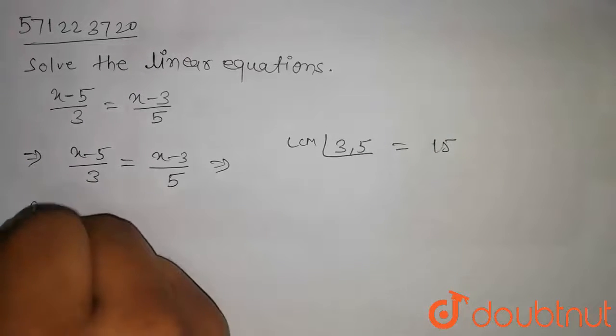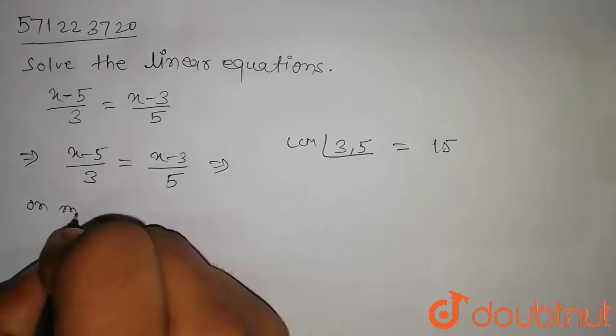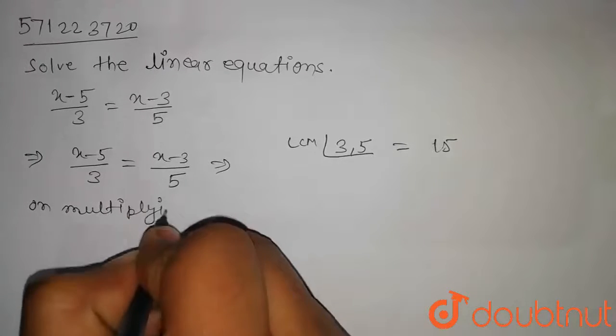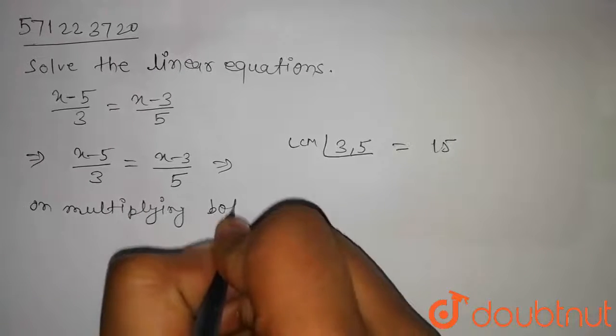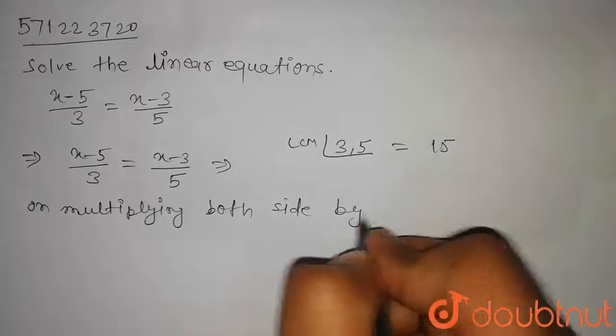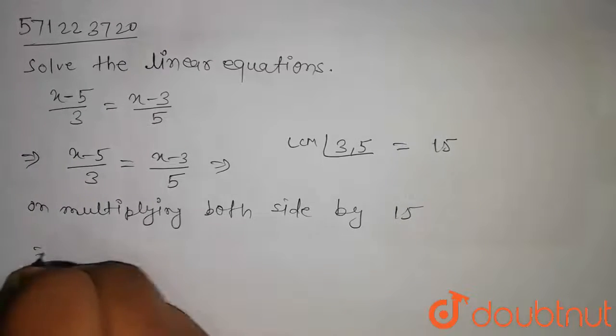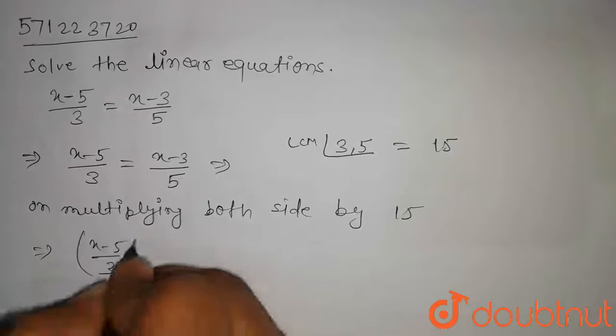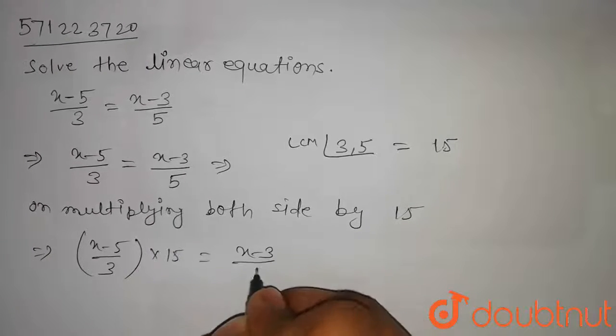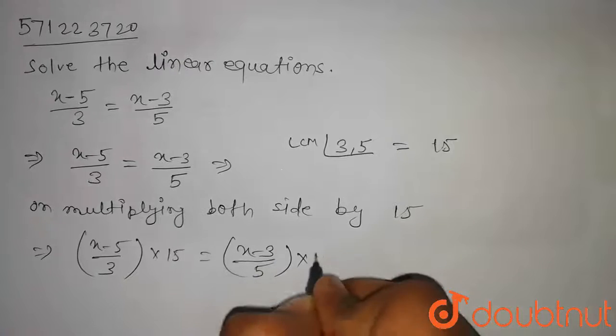Now, on multiplying both sides by 15, we get x minus 5 by 3 into 15 equal to x minus 3 by 5 into 15.